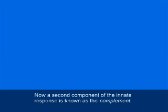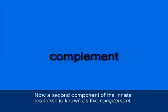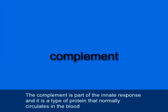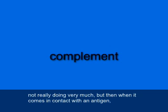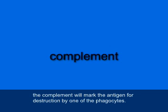A second component of the innate response is known as the complement. The complement is a type of protein that normally circulates in the blood not really doing very much, but when it comes in contact with an antigen, the complement will mark the antigen for destruction by one of the phagocytes.